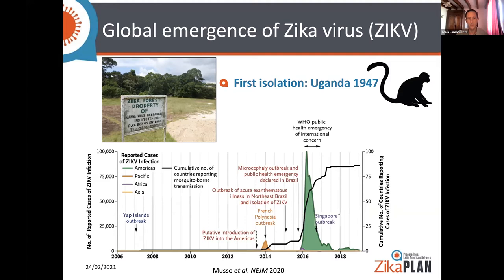It culminated in 2016 when the World Health Organization raised the status of Zika virus to that of public health emergency of international concern, primarily because of novel clinical manifestations such as neurological complications and birth defects.